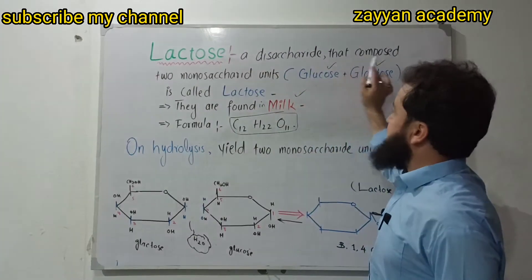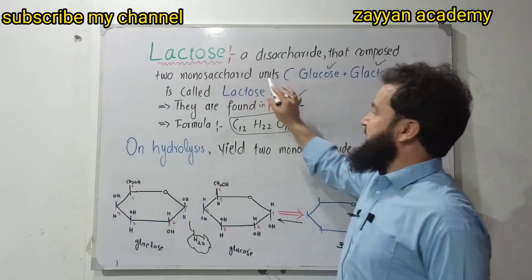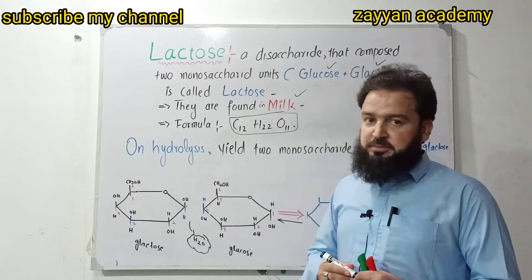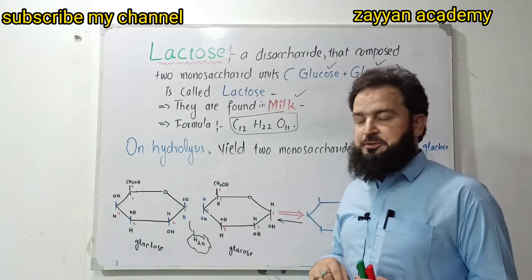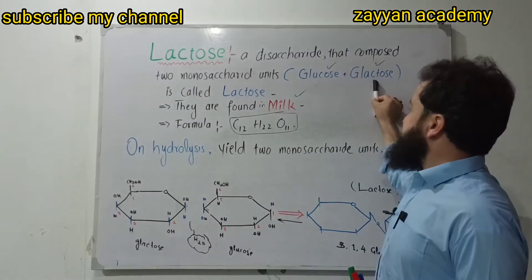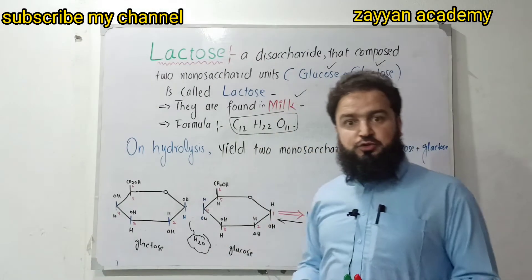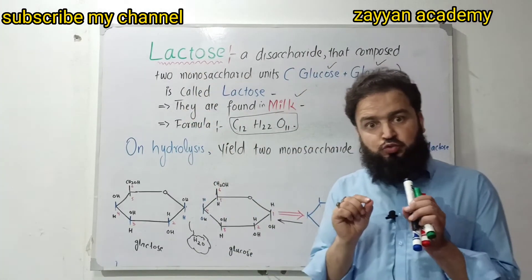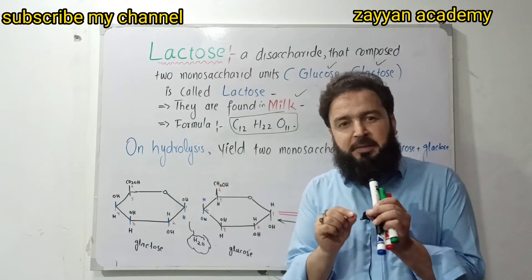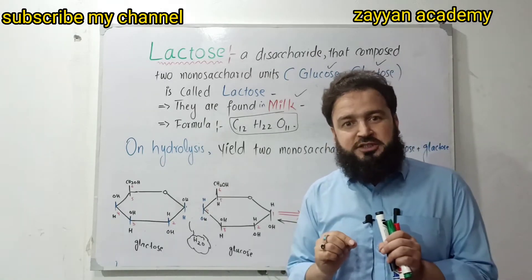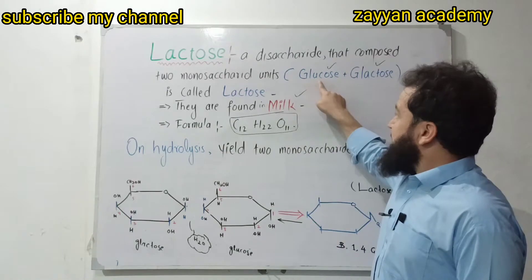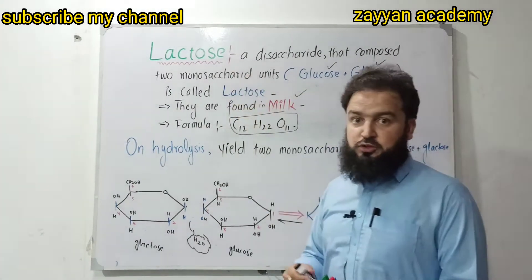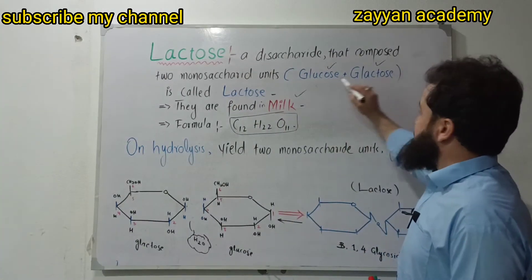A lactose is a disaccharide composed of 2 monosaccharide units. These units are glucose plus galactose. Two monosaccharide units combined with a glycosidic bond — these units are glucose plus galactose. This is lactose.